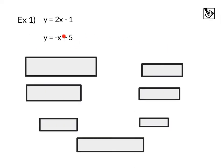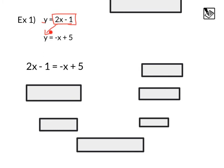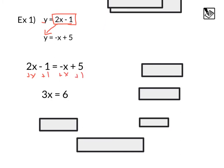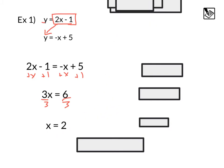Example 1 — y equals 2x minus 1 and y equals negative x plus 5, the same ones we just graphed. Since we know what y equals in both equations, we can substitute: we take the value for y from one equation and put it into y in the other. Sometimes we call this the equal values method. Substituting in gives us 2x minus 1 equals negative x plus 5. Adding x to both sides, then adding 1 to both sides, simplifies to 3x equals 6. Dividing by 3 gives us x equals 2.